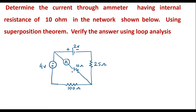As we know in superposition theorem, we are supposed to consider one source at a time. Here we have a 4 volt voltage source and a 2 volt voltage source. Both are independent sources, so we are supposed to consider one source at a time.